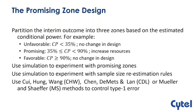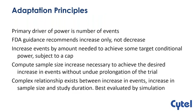The thresholds of 35% and 90% are determined through simulation and experimentation. The software provides three different methods to ensure type 1 error control. Key adaptation principles: the primary driver of power is the number of events. Per FDA guidance, we can only increase events, not decrease them, increasing by the amount needed to achieve a target conditional power subject to a cap. Then we compute the sample size increase needed to achieve the desired event increase without undue prolongation. There is a complex relationship between events, sample size increase, and study duration, which can be examined through simulation.